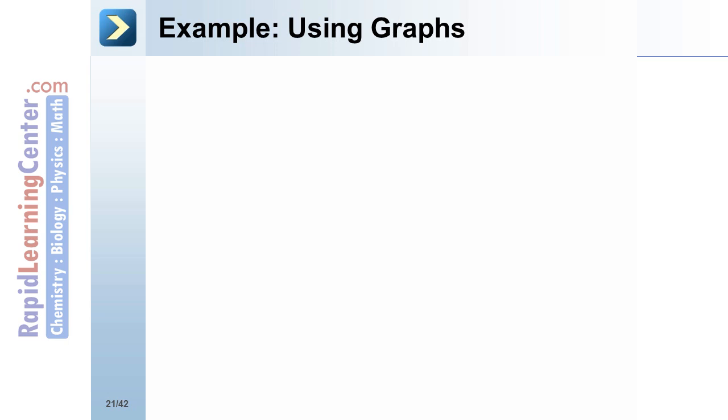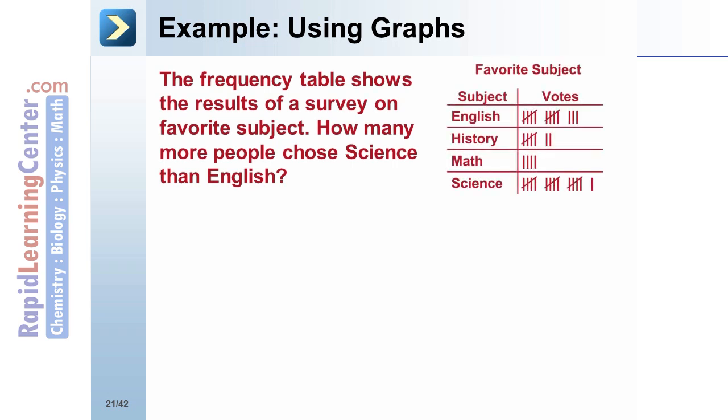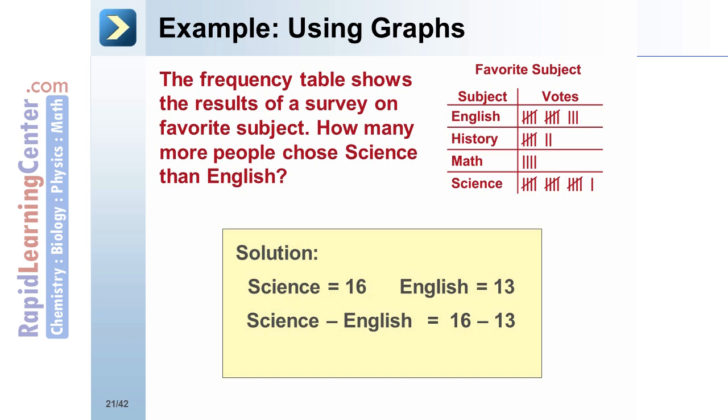Example using graphs: The frequency table shows the results of a survey on favorite subject. How many more people chose science than English? Solution: There were 16 votes for science and 13 votes for English. Therefore, science minus English equals 16 minus 13. Simplify to get 3 more people chose science than English.